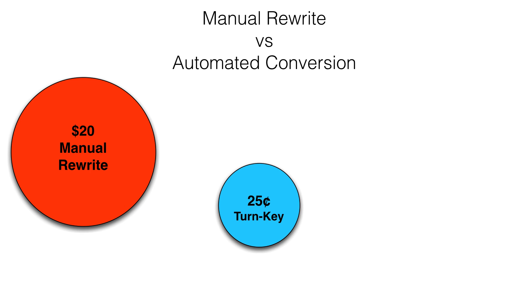$0.25 represents the typical cost to perform a turnkey project after starting with an automated conversion, or to perform an entirely automated conversion project.